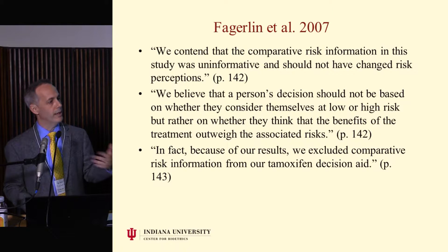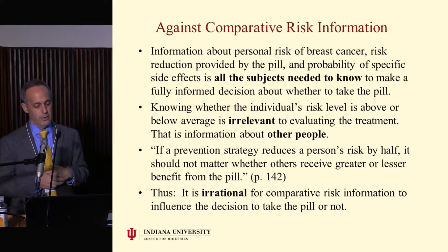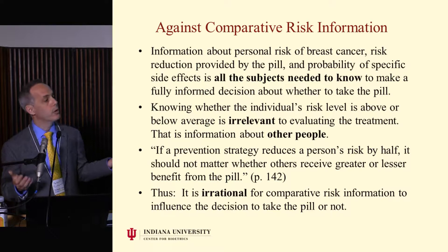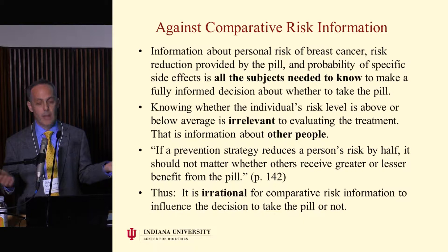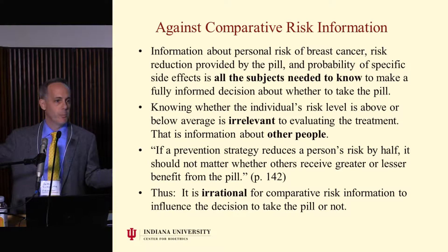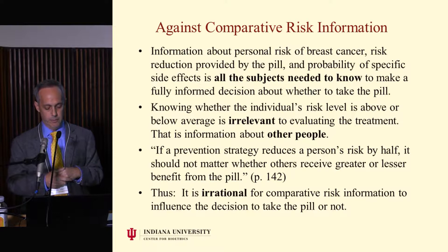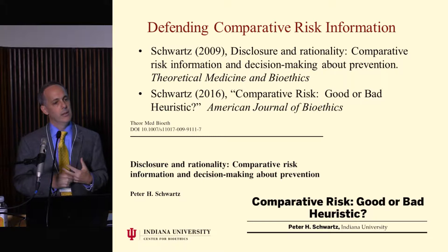They showed comparative risk information had an effect, and they said it was not an effect they believed should happen. So I'm a philosopher — I tried to figure out exactly what they were saying. They weren't very forthcoming; they said this like it was obvious. Here's what I think their argument was: information about personal risk, risk reduction provided by the pill, and specific side effects is all subjects needed to make a fully informed choice. Knowing whether the individual's risk is above or below average is irrelevant to evaluating the treatment. It's information about other people. Your risk has been told to you. Why would it change your decision to find out that some people have 12% risk? Your risk has been told to you.